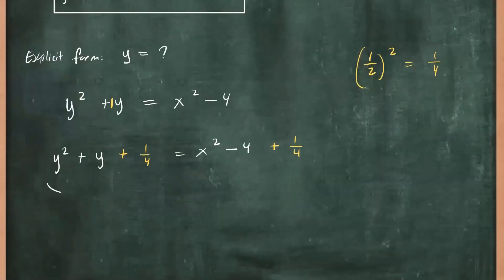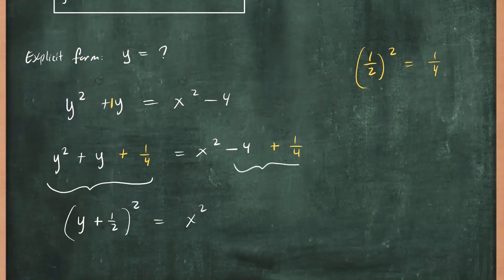And now we factor. So this would factor into (y + 1/2) times (y + 1/2), which is really (y + 1/2)². And then this is equal to x². Here you can combine these, put them in common denominators. You'll have -16 + 1 over 4, which is -15/4.